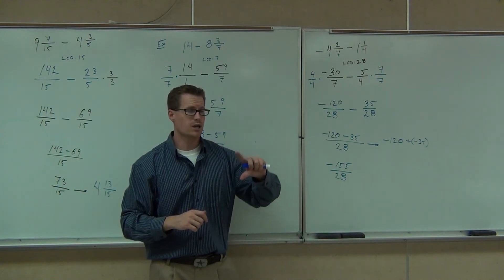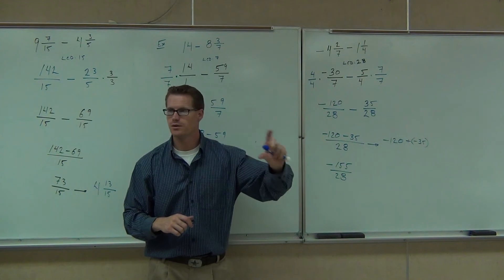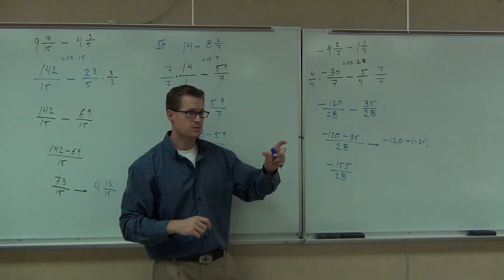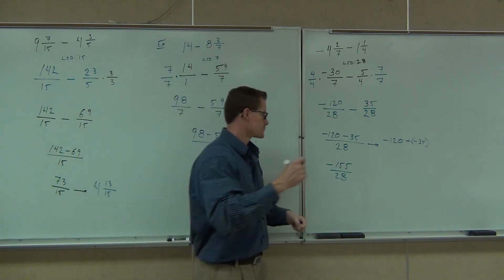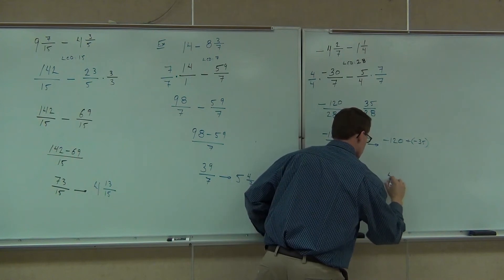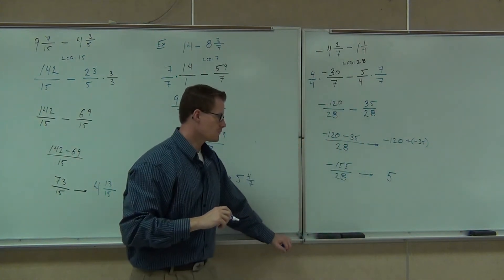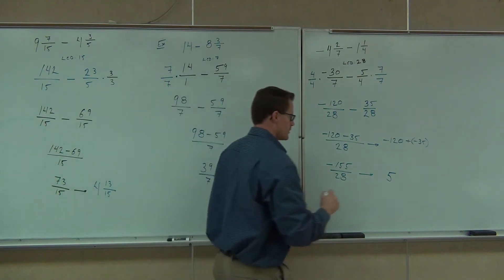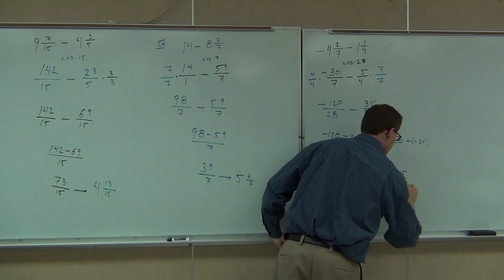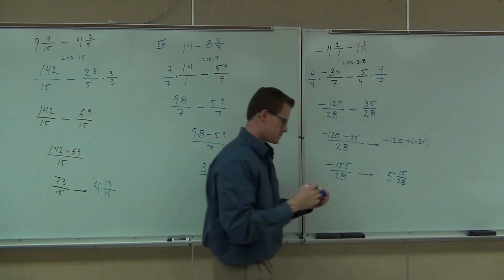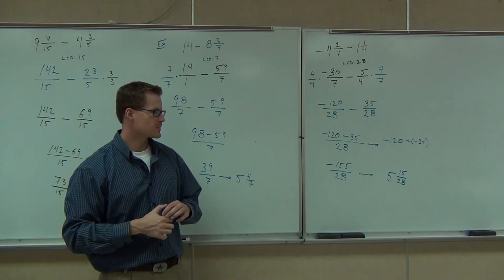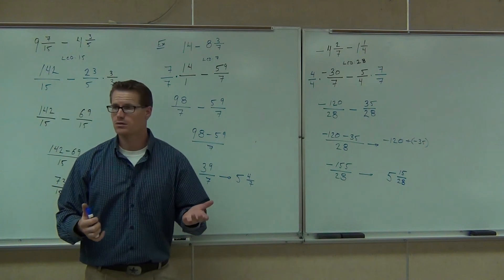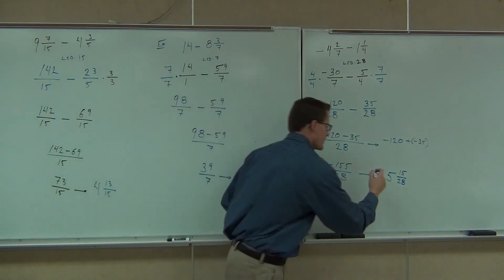Can you translate negative 155 over 28 back into a mixed number? How many times does 28 go into 155? Five times, with a remainder of 15. And it's negative — because if I lose the negative, I've done something wrong. So the answer is negative 5 and 15/28.